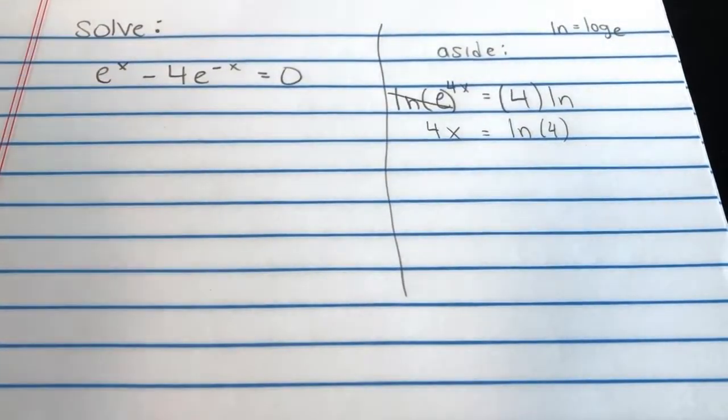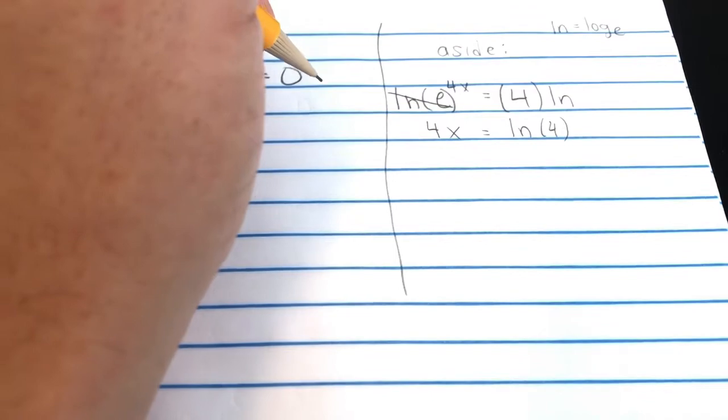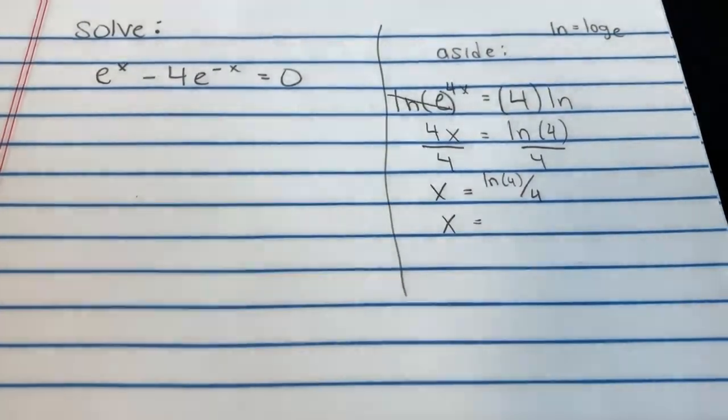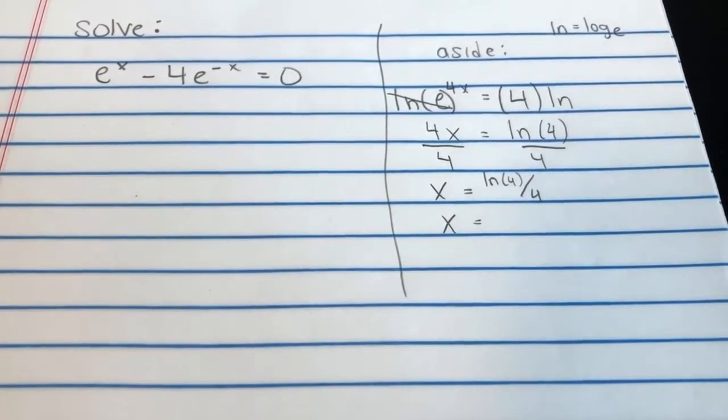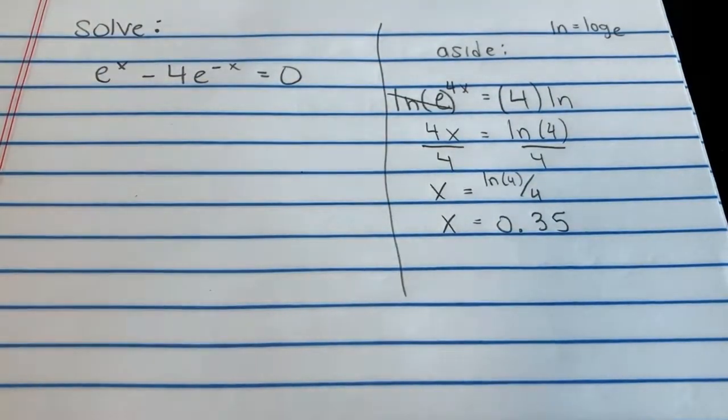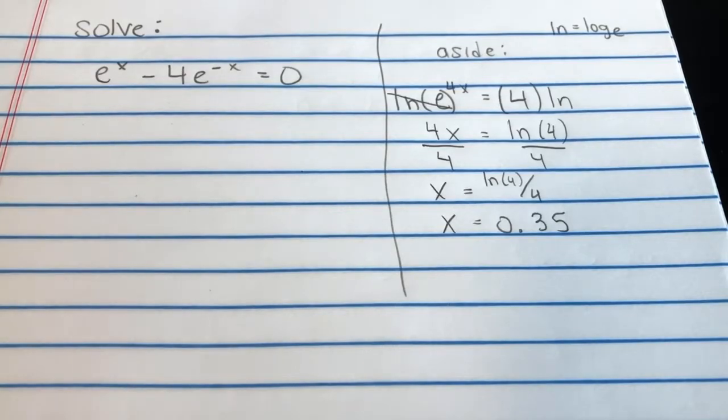Now, once we're here, this is just a simple algebra problem. We'll divide by 4, and we're left with x equals ln 4 over 4. That's something you can just plug into a calculator, ln 4 over 4. And x is equal to, it's not going to be a pretty number, but it's 0.3, let's just say 0.35. Okay, so that's how you get rid of an E.